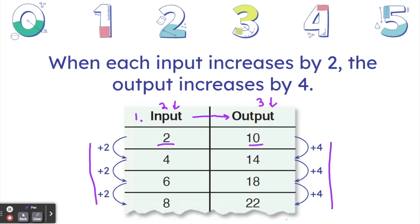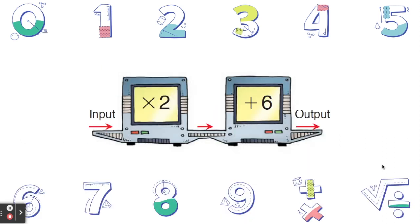Now it's your turn to try and figure one out on your own. Using the same two-step input output machine — multiply the input by two, then add six to get the output — what would you get if the input was eight? Good luck.